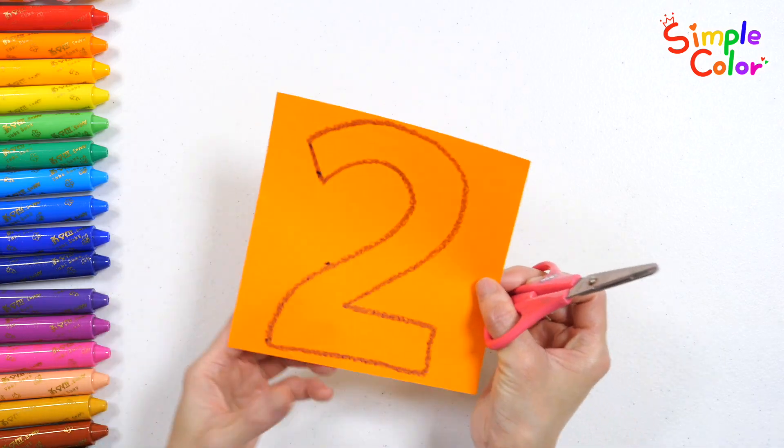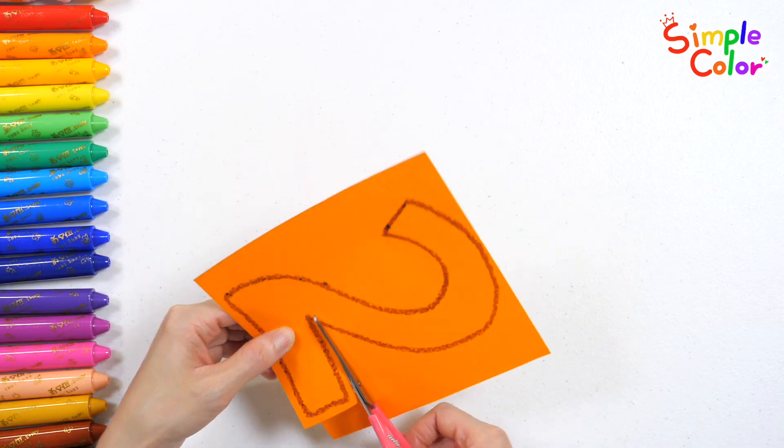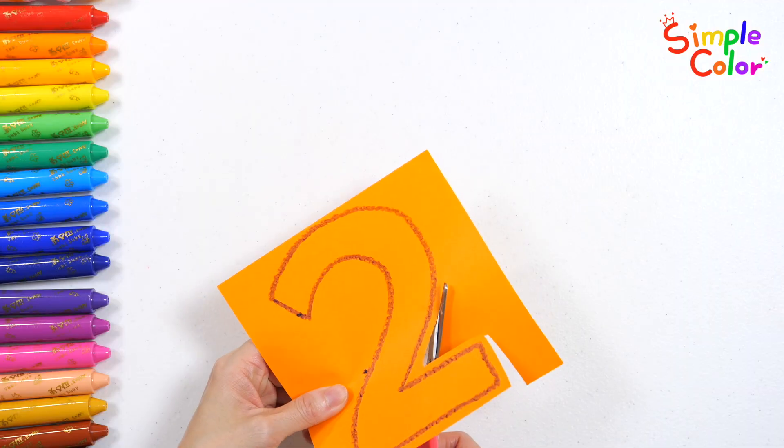Ta-da! We drew the number two on the colored paper. Let's cut along the shape of the number with scissors.